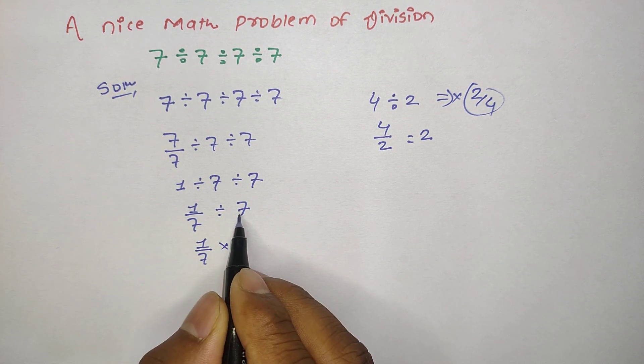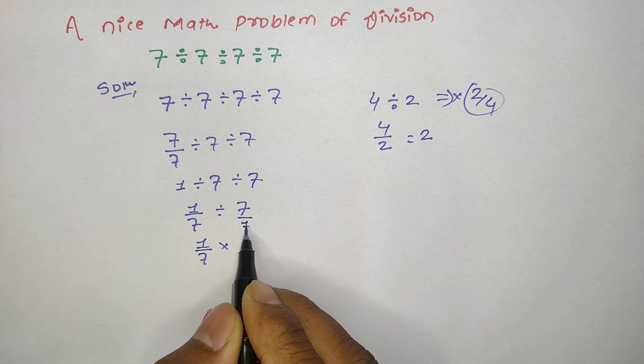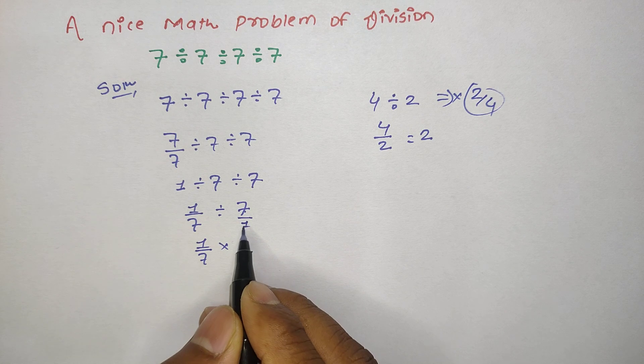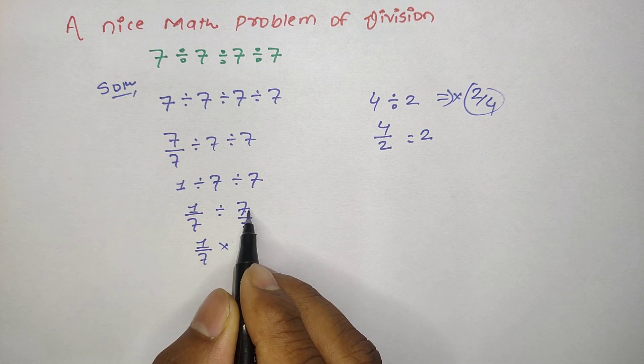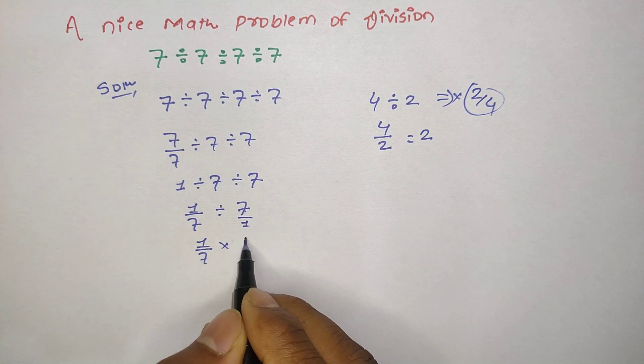As we know that this 7 has the denominator 1, so here we have to interchange the position of numerator as well as denominator. That is, we can write 1 in numerator and 7 in denominator.